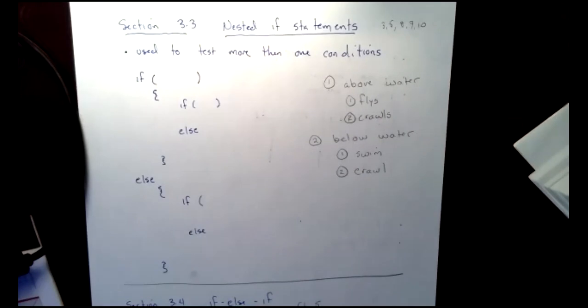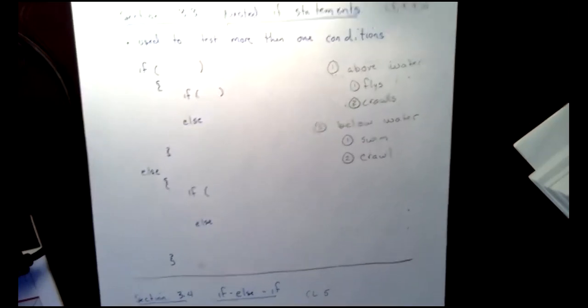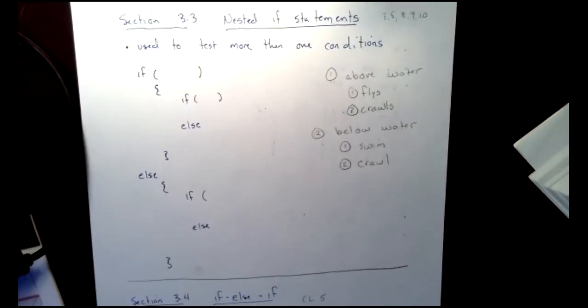So I want to now do an if statement. And what you're going to see is inside the body of the if statement, I can have another if statement if I so desire. So I'm going to start with a problem. And the problem is going to be, is the animal above water or below water? So if they enter a one, we know that it's above water.